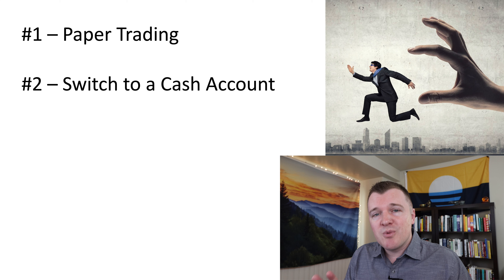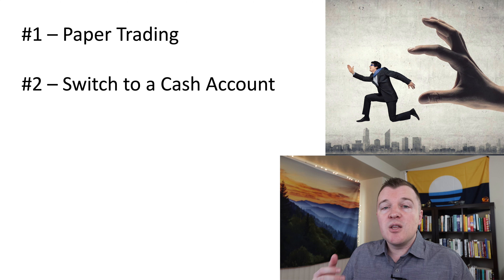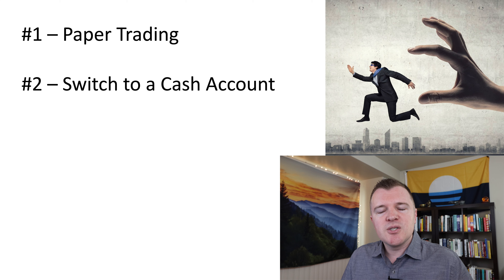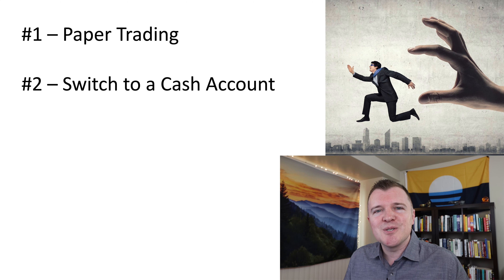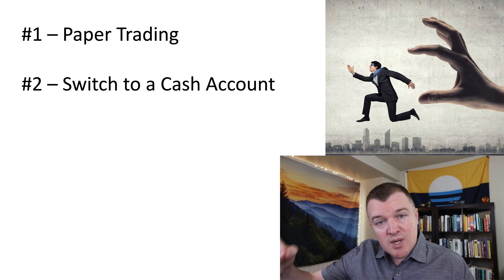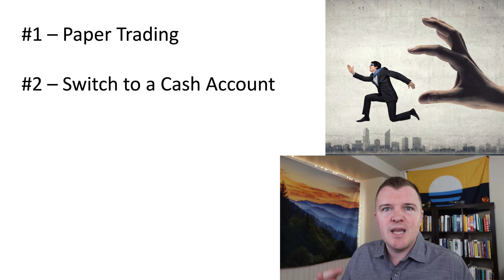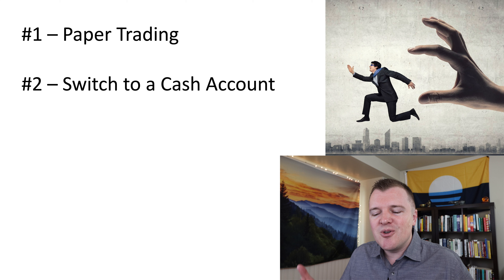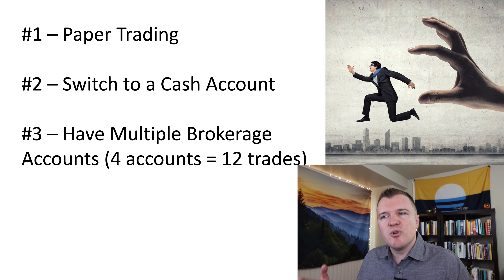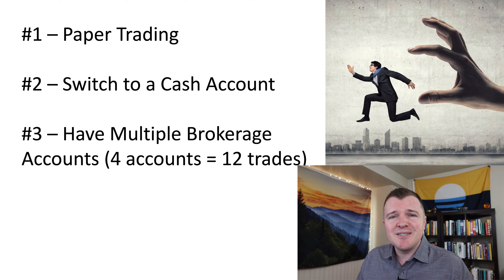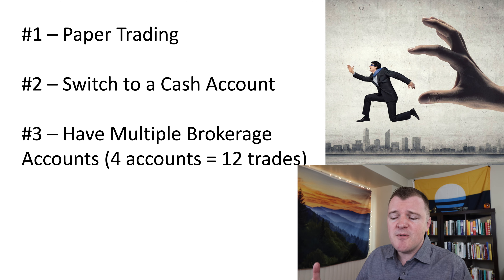The second option is to switch your margin account to a cash account. By default your brokerage account is set up with margin trading enabled, meaning you don't have to wait two days for the sale of an equity to settle before you can buy again — basically your broker is lending you money. Fair warning: if you disable this you can't get it back. If you do disable it, you can only day trade with settled funds. So with $20,000 in the account you can rapidly buy and sell, but every time you sell you have to wait two days before you can buy with that money again, so you will rapidly lose the equity available to you for that day.